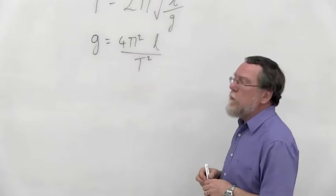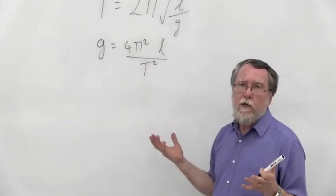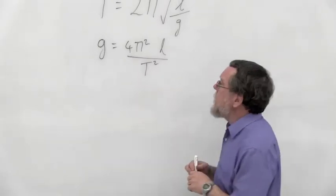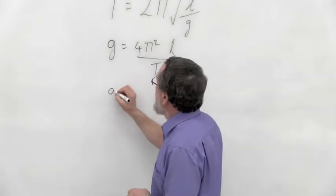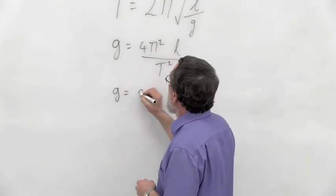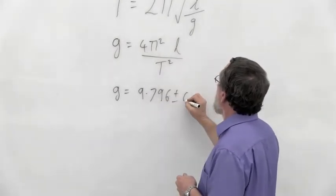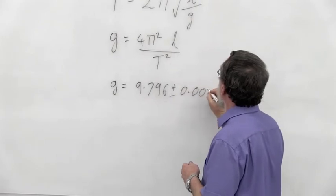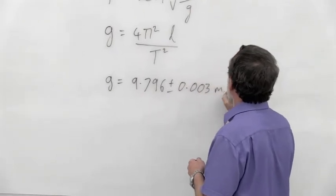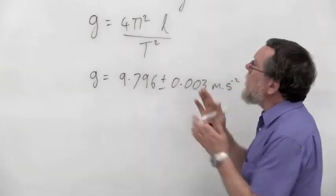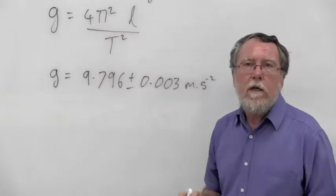Now why do I want to do this, particularly if I already know what g is? At this latitude, g is equal to 9.796 ± 0.003 meters per second squared. Now if I already know that, why do we bother to do this exercise?